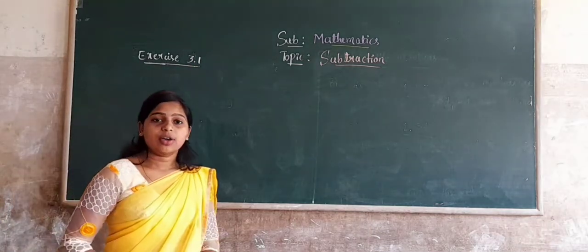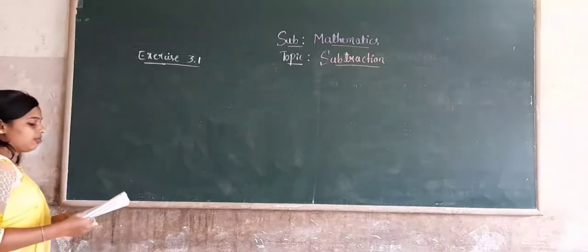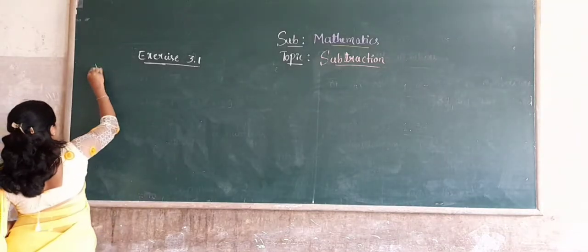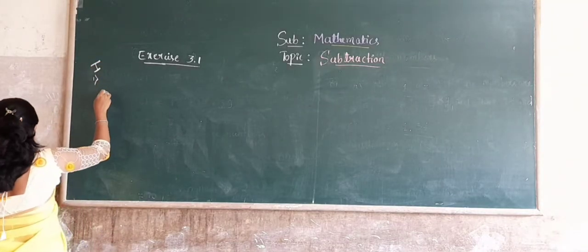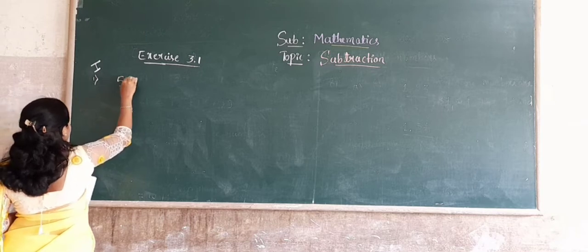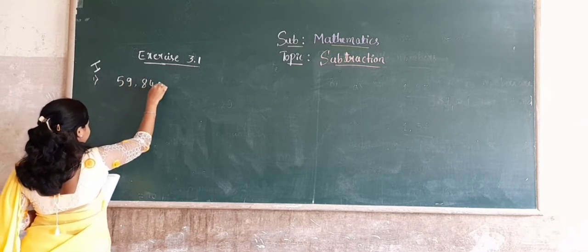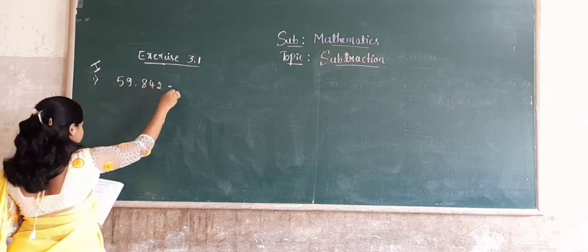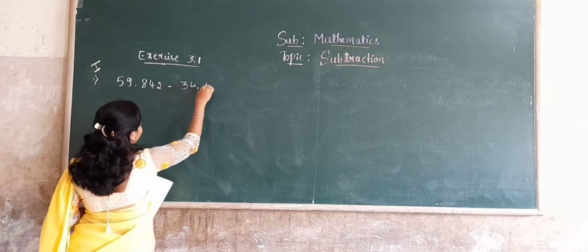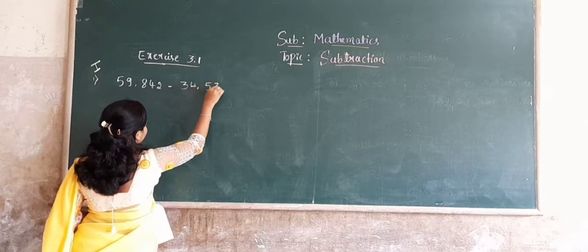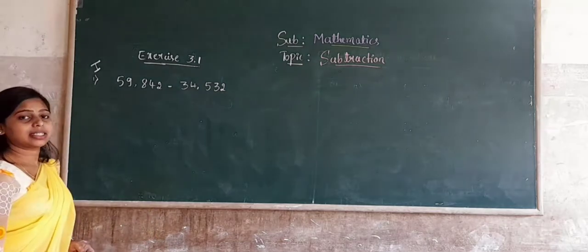In the first problem, find the difference. Consider the first problem. Here we have 59,840 minus 34,532. Now write the numbers according to their place value.